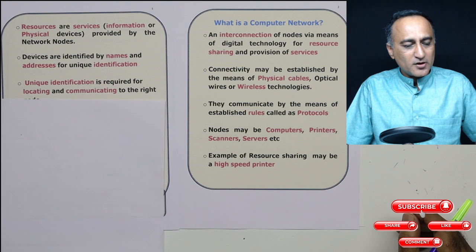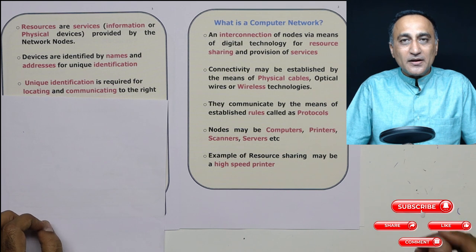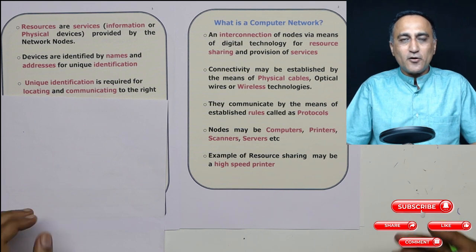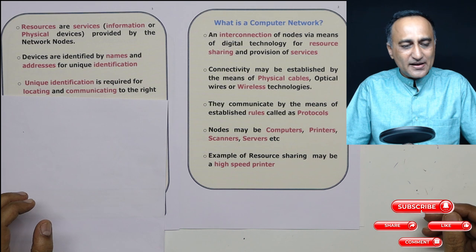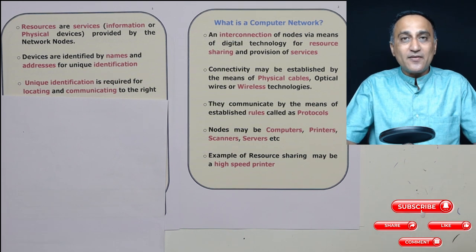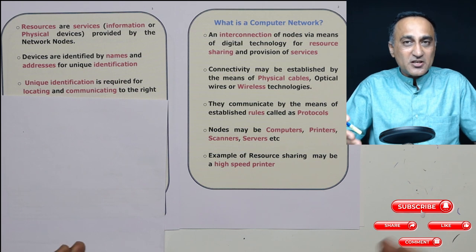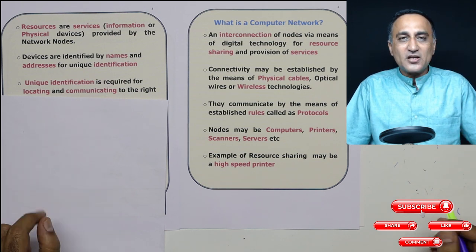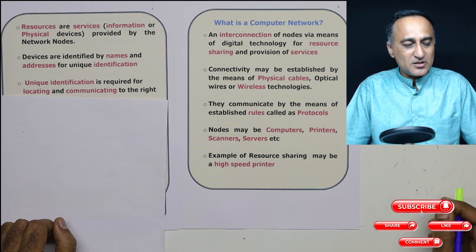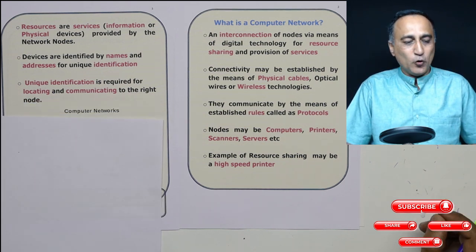Resources are identified by names and addresses. Suppose I want to talk to the printer — I can only talk to the printer if, on that network, the printer has a unique address and name. Otherwise, how will I know I need to talk to that printer? Or how will the network send my communication data to the printer? Unique identification of every device on the network is important so that we can locate and communicate with the right node.